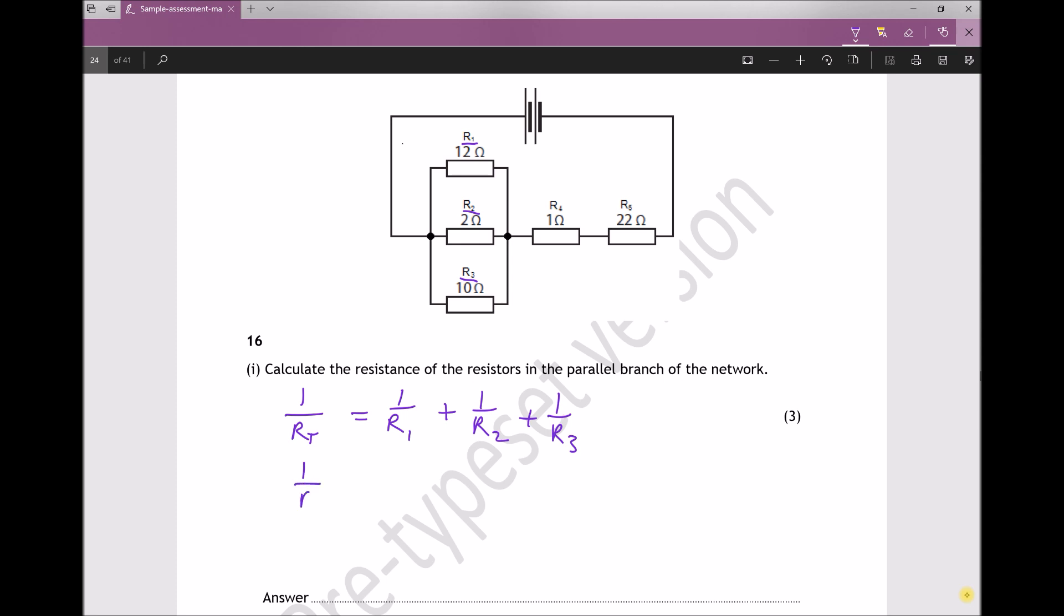Therefore, 1 over RT, substituting in our values: R1 is 12 ohms, so we've got 1/12 plus R2 is 2 ohms so plus 1/2, and R3 is 10 ohms so plus 1/10.